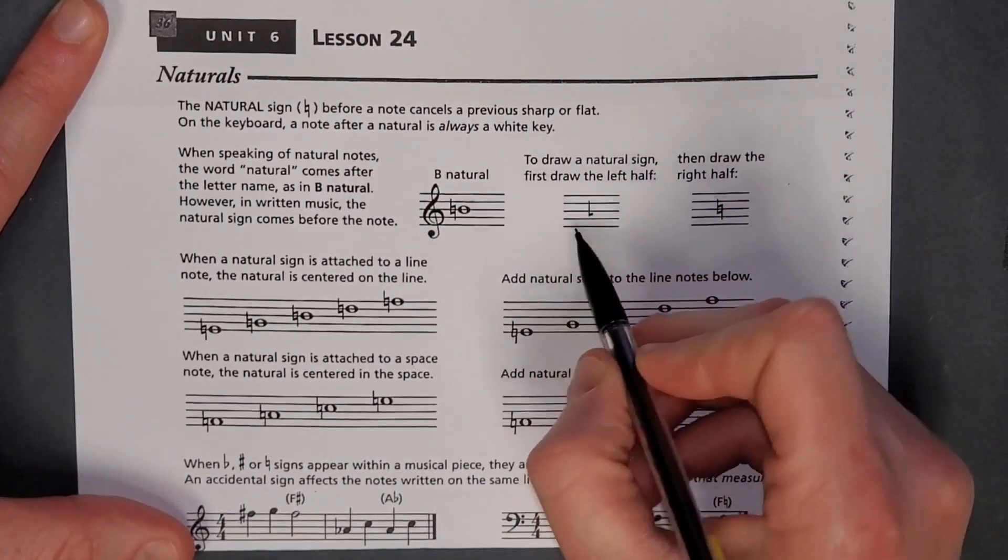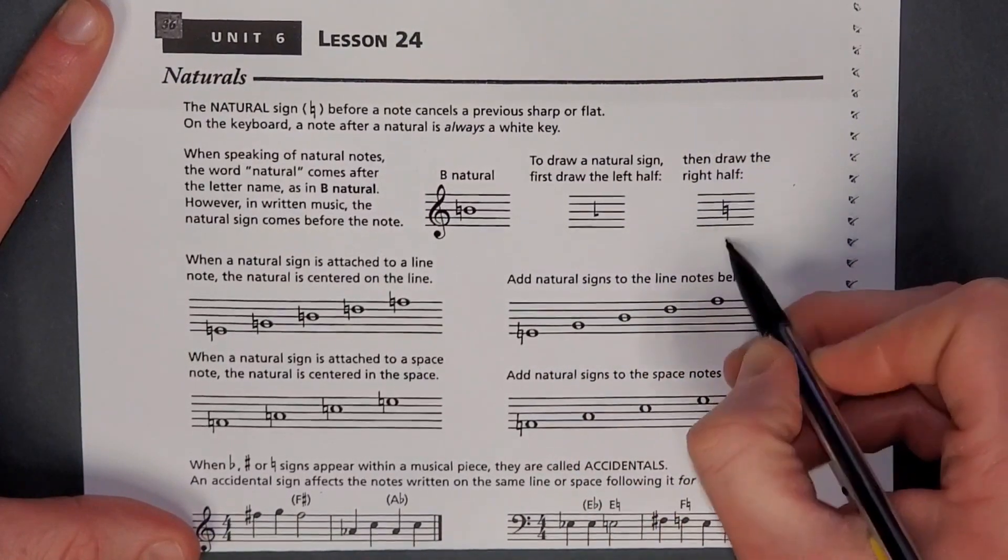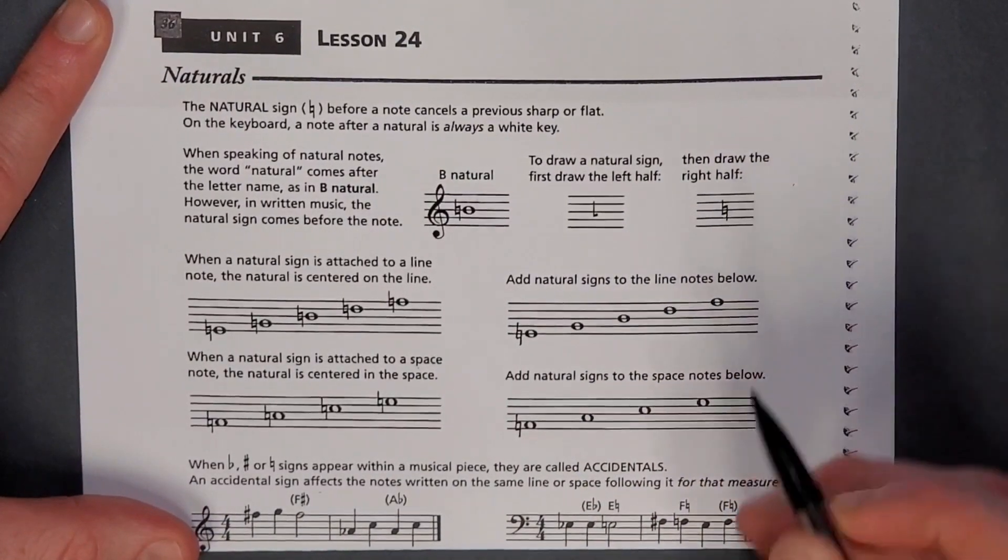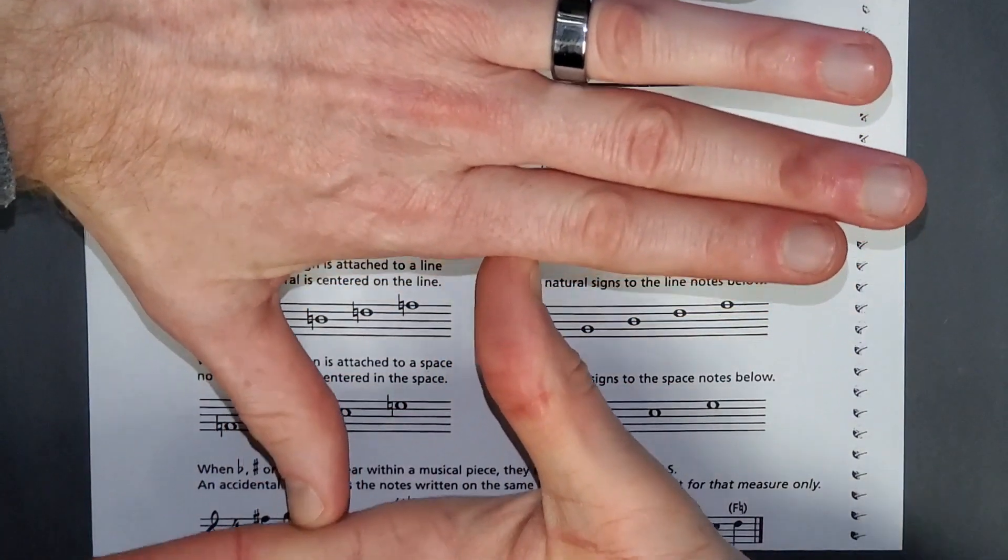To draw a natural sign, first draw the left half. So it's like you make an L and then you make an upside down L. So it's like, I don't know if you've ever done this with your hands, it's kind of like that.